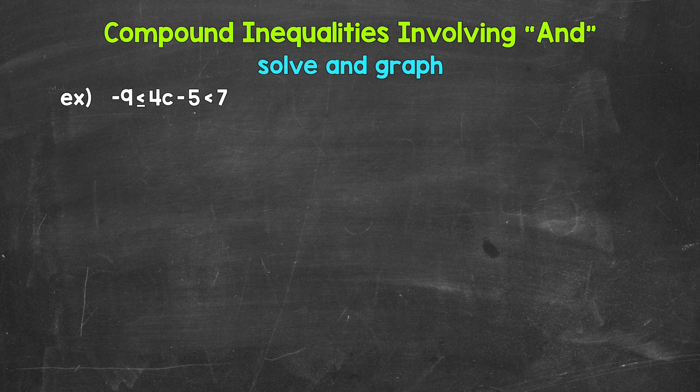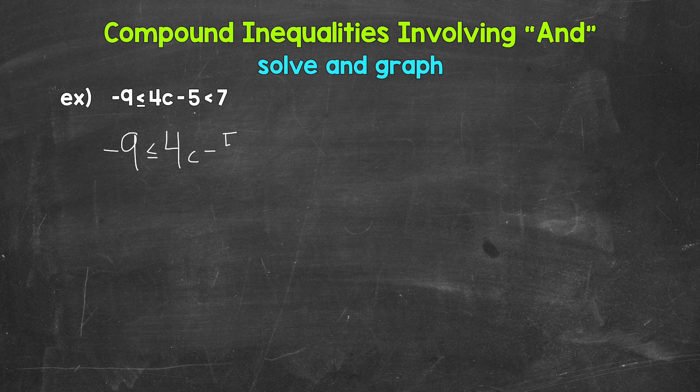When we solve a compound inequality involving and, we can solve everything all at once, meaning we can solve both of the inequalities that make up the compound inequality at the same time. Once we solve, we can graph the solutions on a number line. Let's start by rewriting the compound inequality and we will solve from this.